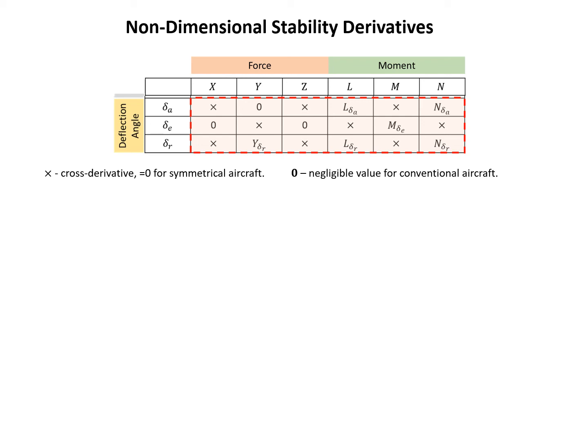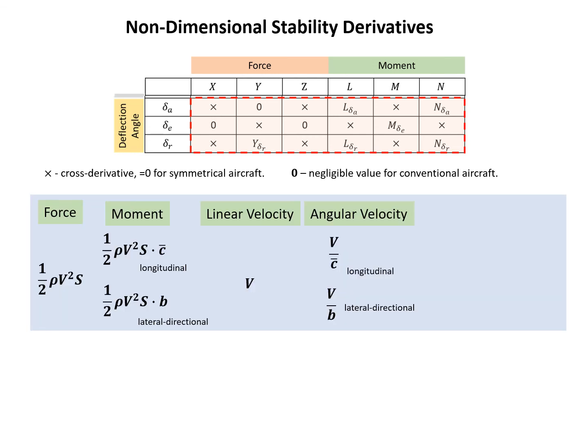At the beginning, the big table defining stability derivatives also included deflection angles in the lower part — force and moment changes with respect to deflection angles. To non-dimensionalize these, note that in flight dynamics deflection angles are always measured in radians, so their dimension is 1. This makes the task much easier: we just keep the deflection angle denominator as 1, and use the same denominator as we would for the force or moment alone.